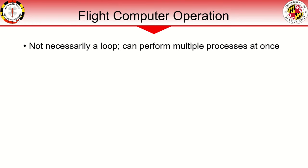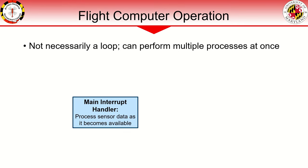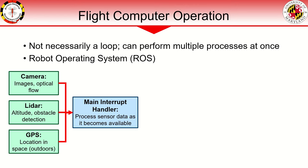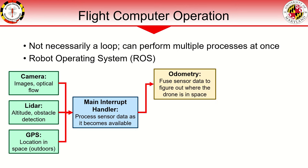Next, we will look at the operation of the flight computer. This is a very broad overview of what could be happening on board, though the specifics vary based on the application. Because there is so much going on, it is not necessarily a loop, but a continuously updated stream of input and output data. The flight computer needs an interrupt handler to process sensor data as it becomes available. The popular system used is ROS, which allows for easy access across multiple sensors, computations, and outputs. An autonomous drone might have a combination of cameras, LIDAR, or GPS on board. This sensor data is used to estimate the drone's position in space from information about its surroundings or movement, which is known as odometry.